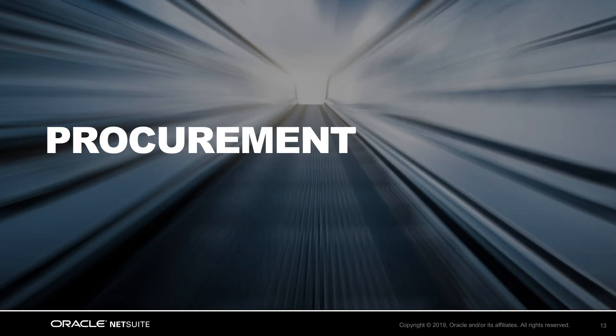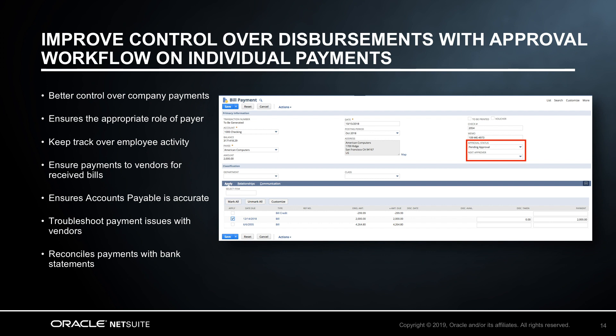Moving on to procurement highlights. This new functionality provides the ability to add approvals on specific payments in accounts payable. When a user creates a payment for a bill, a transaction for a single vendor payment, or an employee expense report, you can now choose to have an approval workflow in order to approve, process, and complete the specific payment. Control is enhanced as the payment cannot be processed until the payment has been approved, providing better control over the accounts payable process and a heightened level of visibility on payments where additional oversight is warranted.